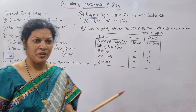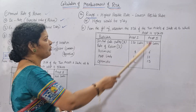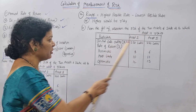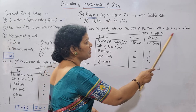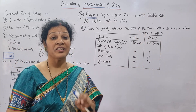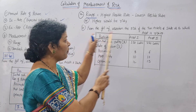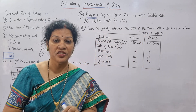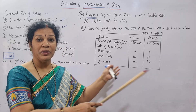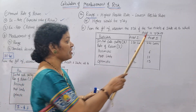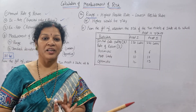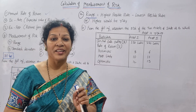Now see the problem: from the following information, ascertain the risk of the two assets and state as to which asset is riskier. Notice that the word 'range' is not mentioned in the problem, but two companies' data is given and they're asking which asset is more risky — so you understand you have to calculate the range.